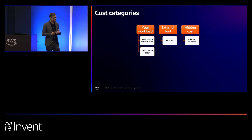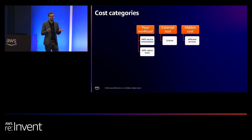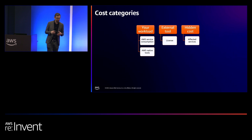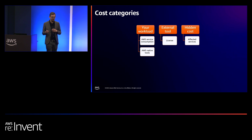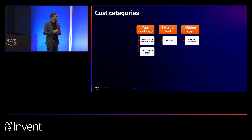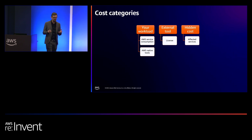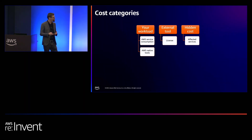First here, we have the affected services. For example, how does a security tool react when there is an increased amount of API calls in your environment? Do you need additional trails in CloudTrail to share with that external tool? Or is your SSM Systems Manager being used — like Explorer, OpCenter, Automation? These might be affected by actually using these external tools.